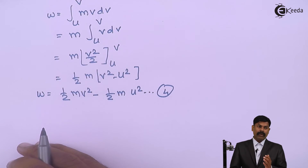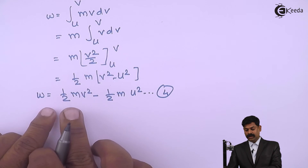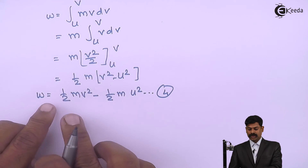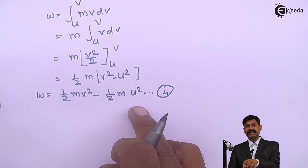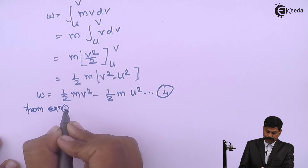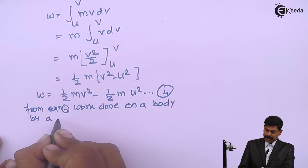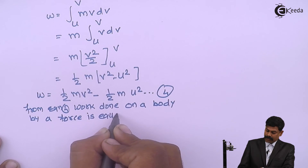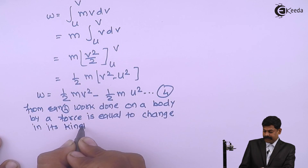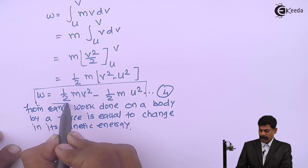Equation 4 indicates that work done on a body by the force is equal to the change in kinetic energy. When the body reaches a certain position having final velocity v and initial velocity u, half mv squared minus half mu squared is the change in kinetic energy. So work done on a body by the force is equal to the change in kinetic energy, and this principle is called the work-energy principle. Thank you.